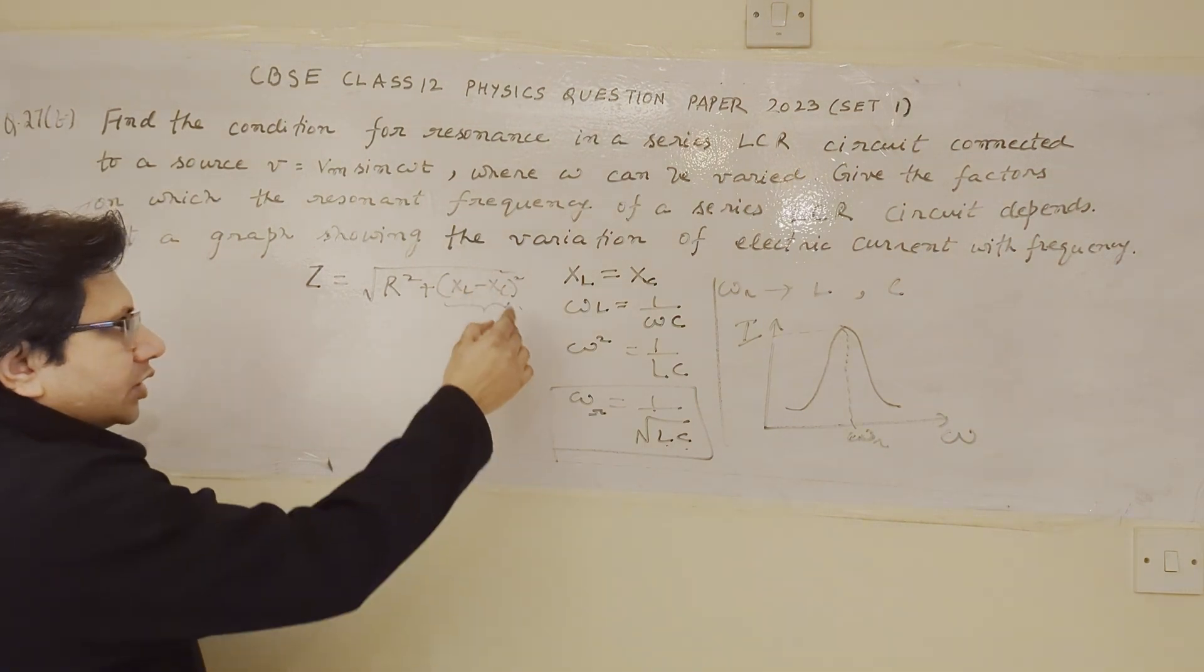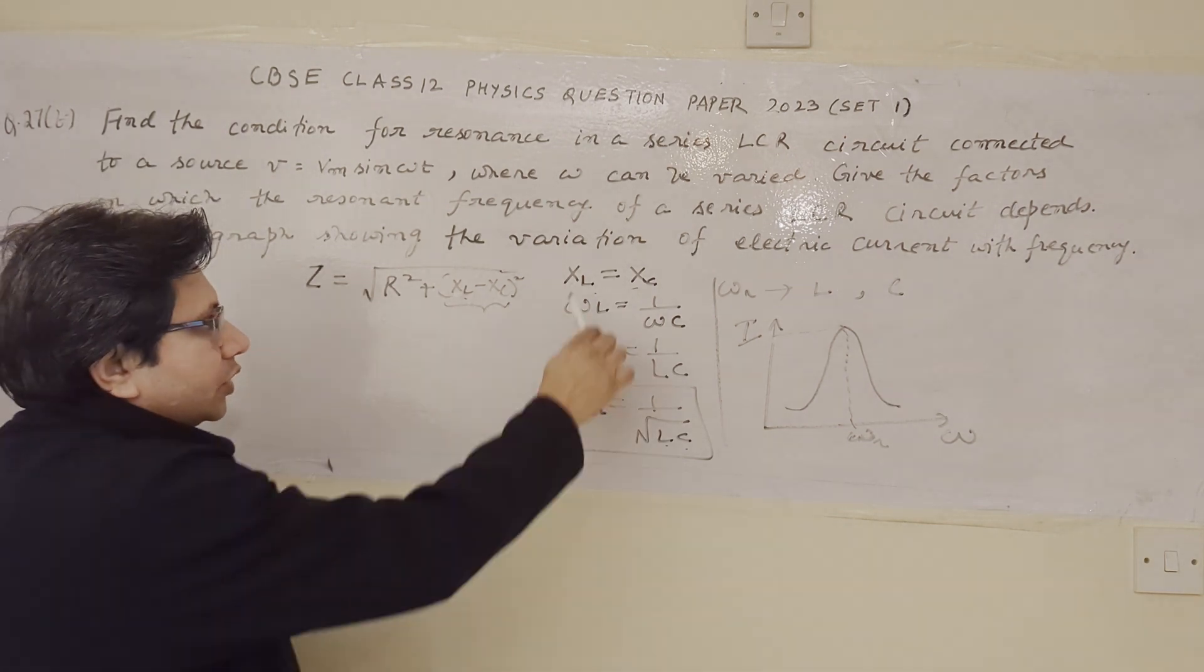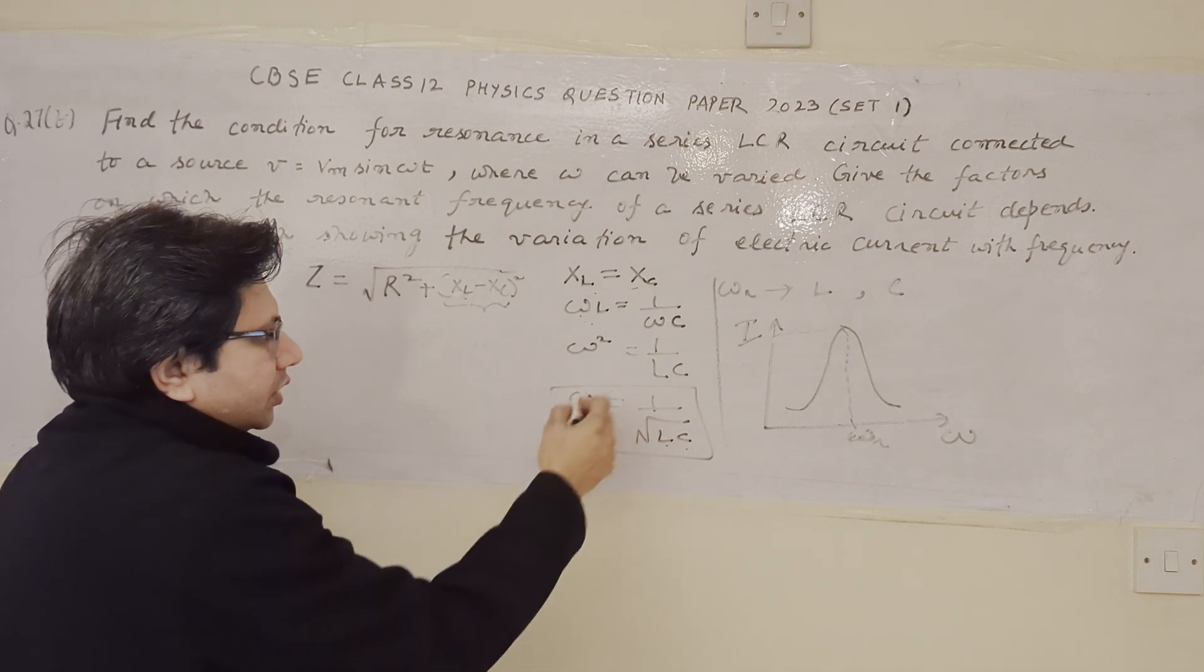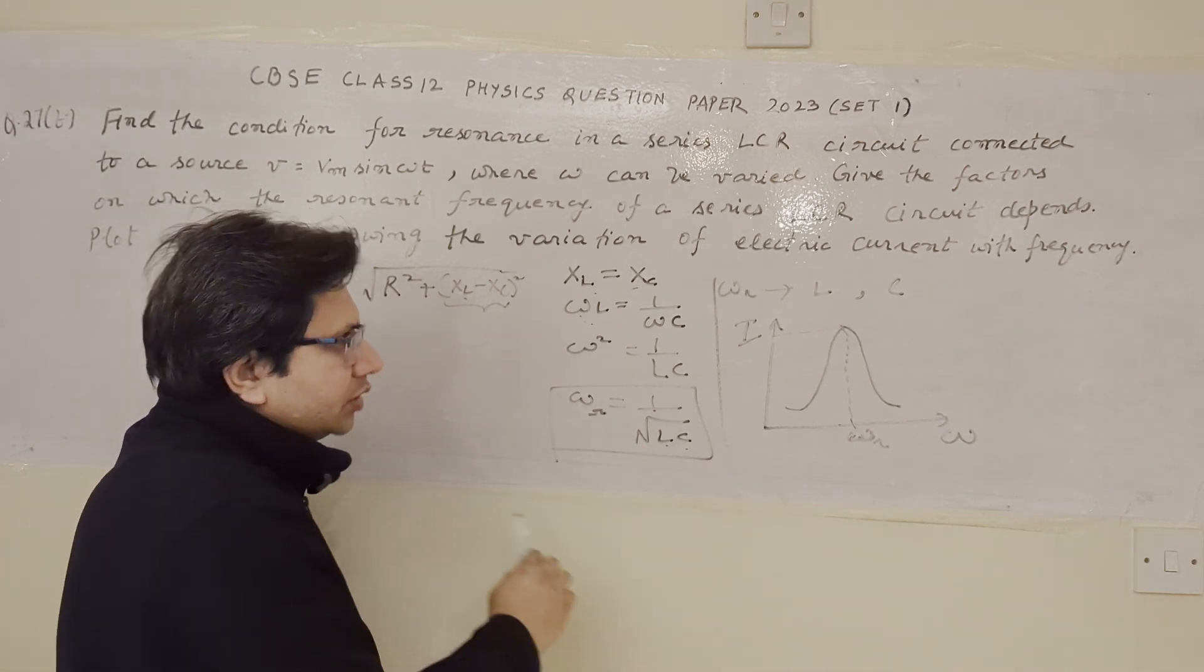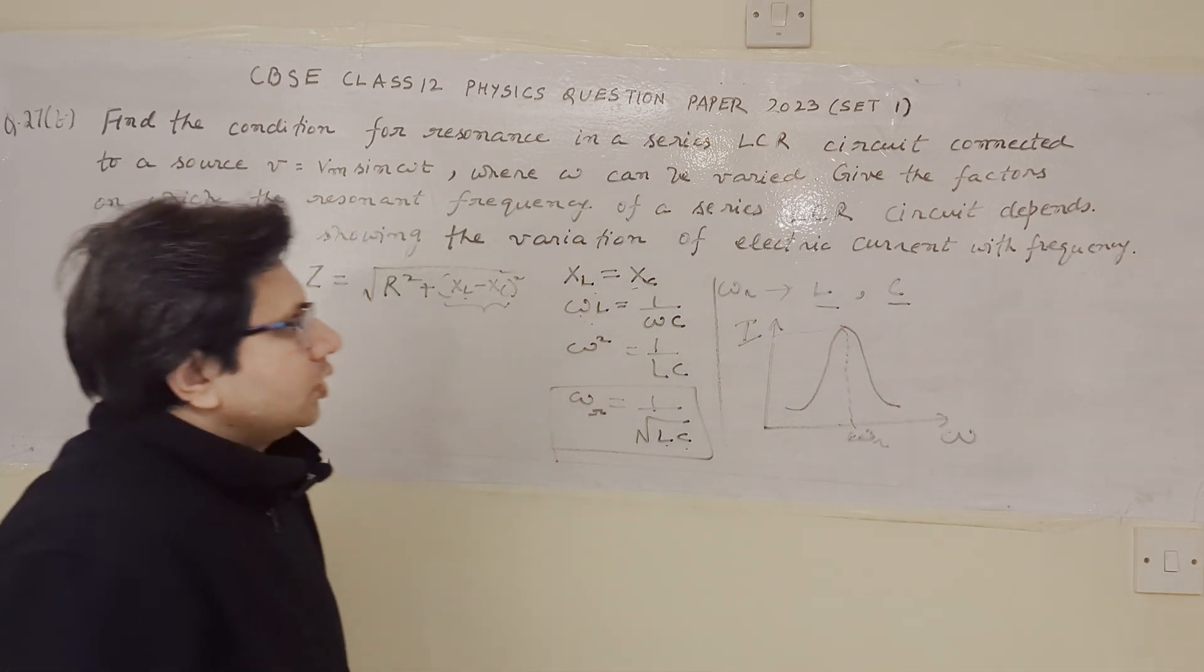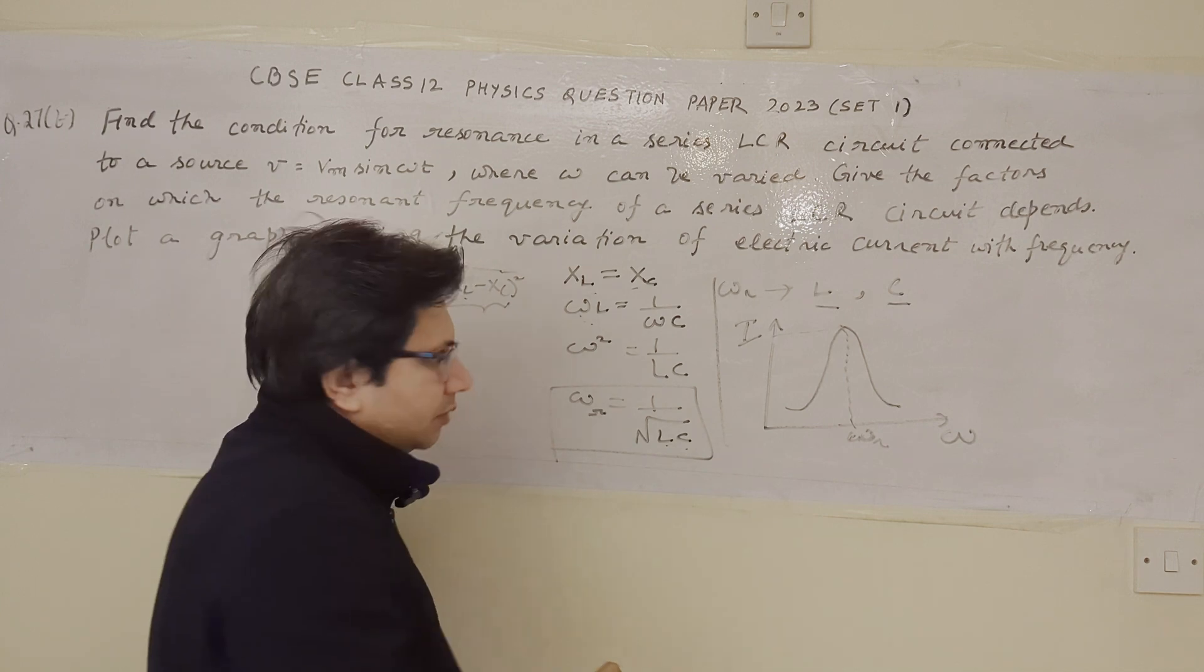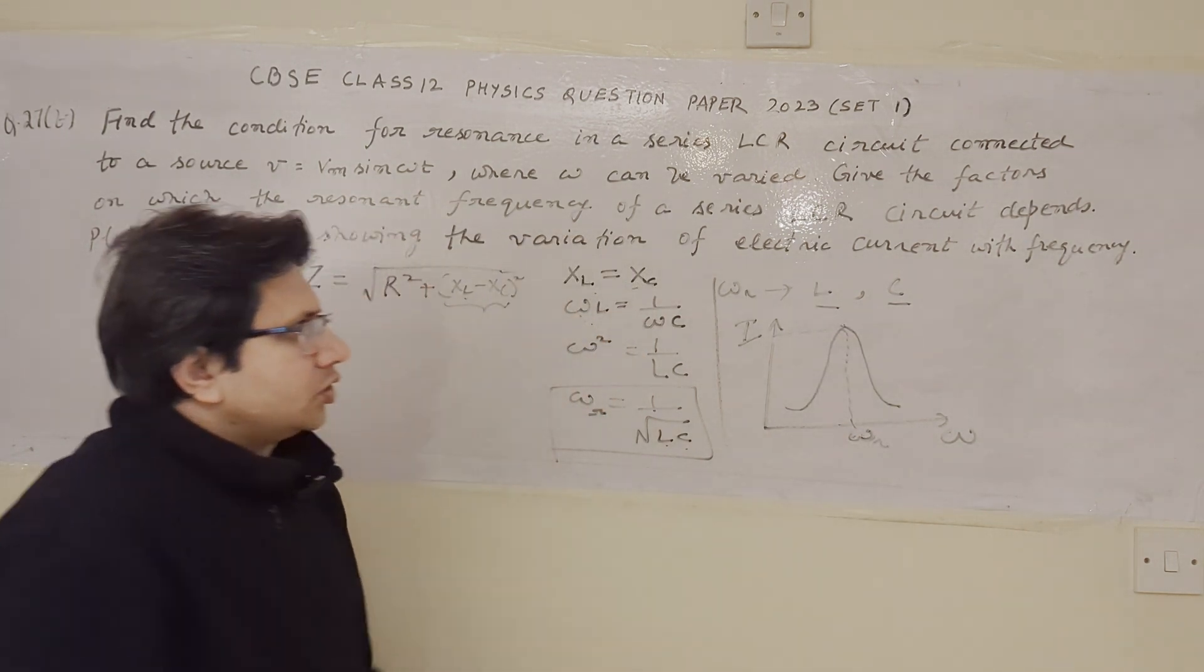The impedance is minimum when XL and XC are equal. XL is our inductive reactance, XC is our capacitive reactance. Here XL and XC values put in, omega L and 1 upon omega C. Here we calculate omega which comes out to be 1 upon square root of LC. So this is the resonant frequency. The condition on which it depends, depends on inductance and capacitance. And if we have to plot the current and frequency, then we get a bell-shaped curve. This bell-shaped curve peak value obtained at the resonant frequency omega R. So this is the explanation.